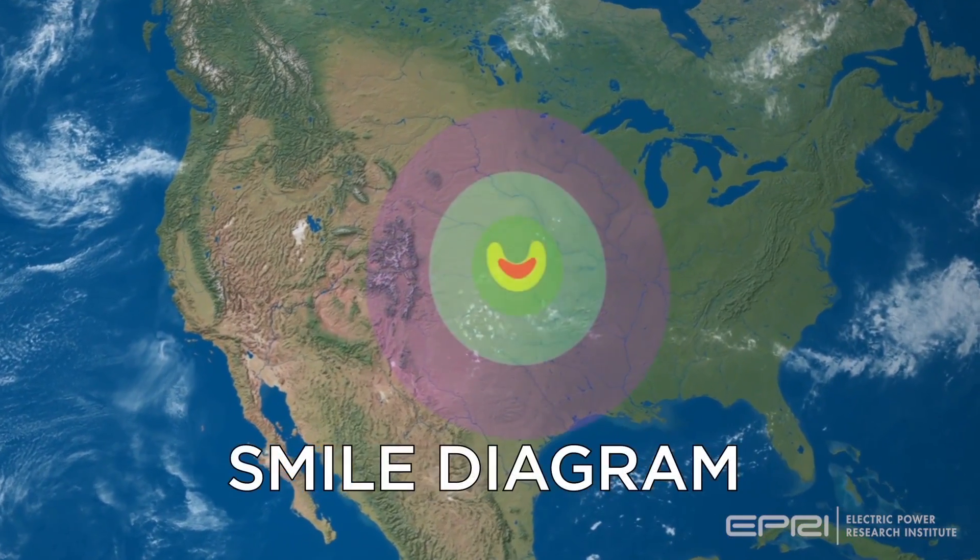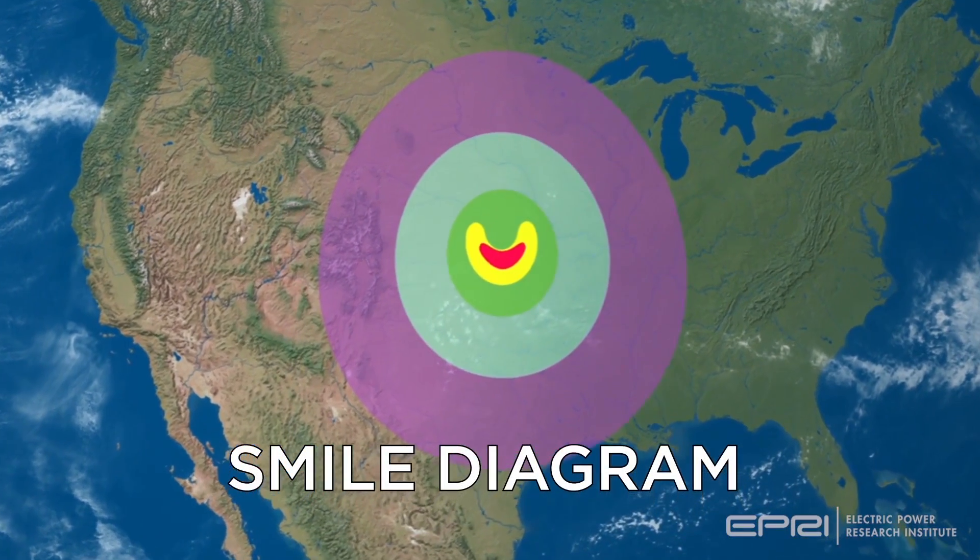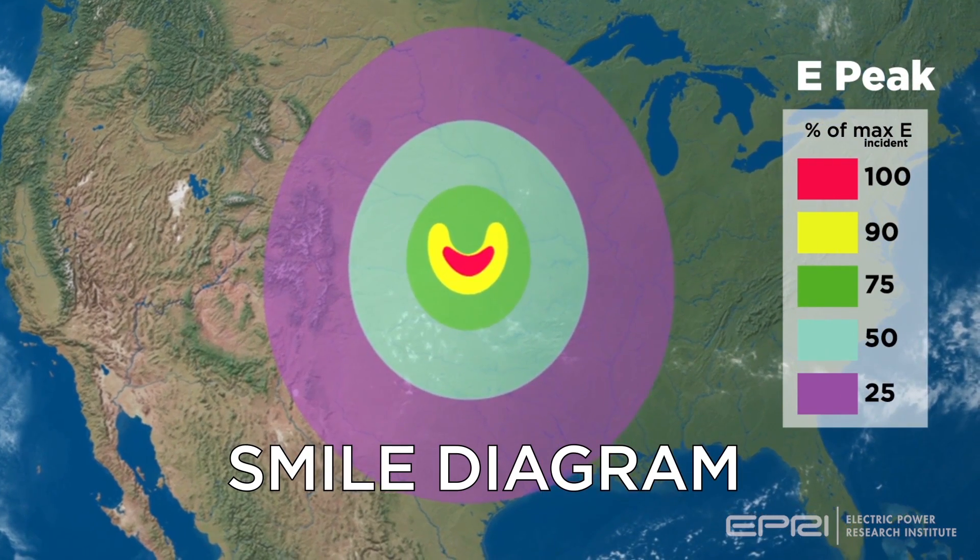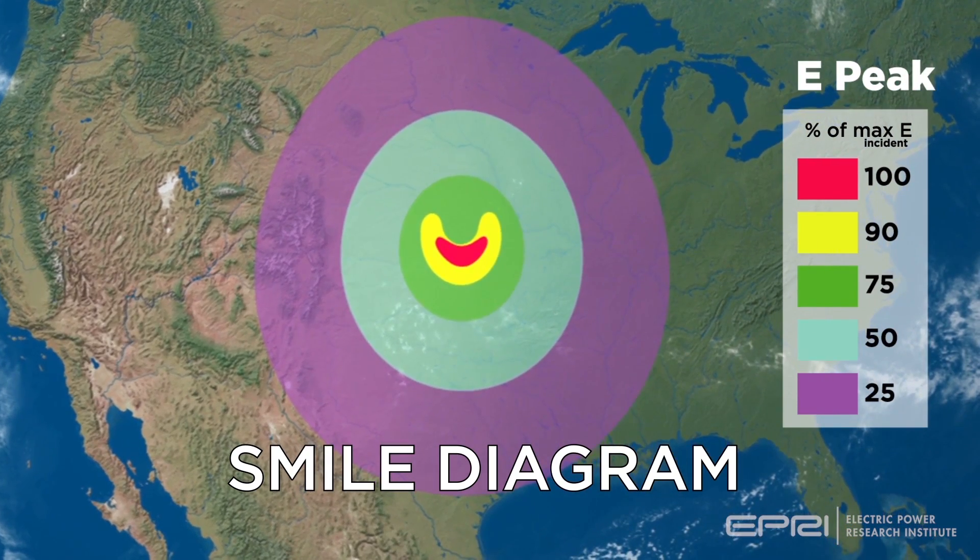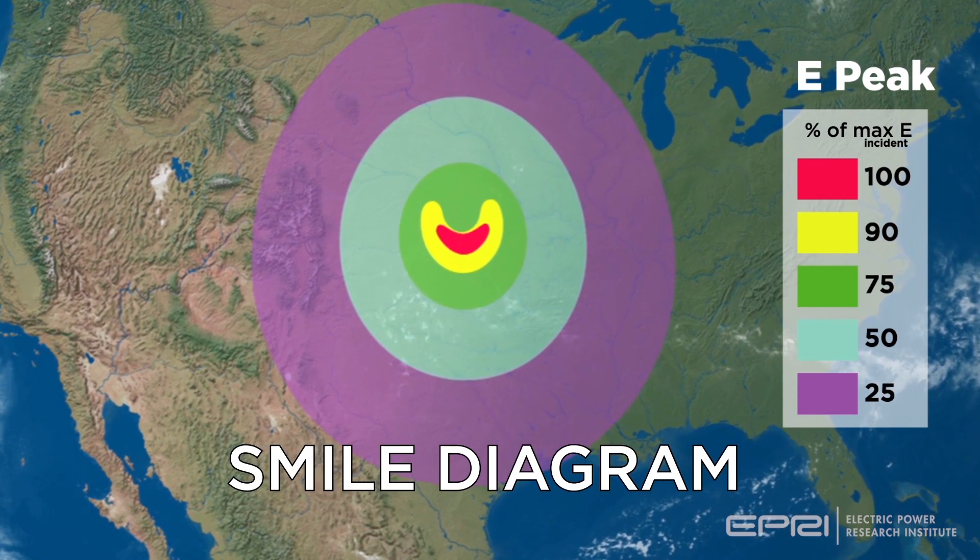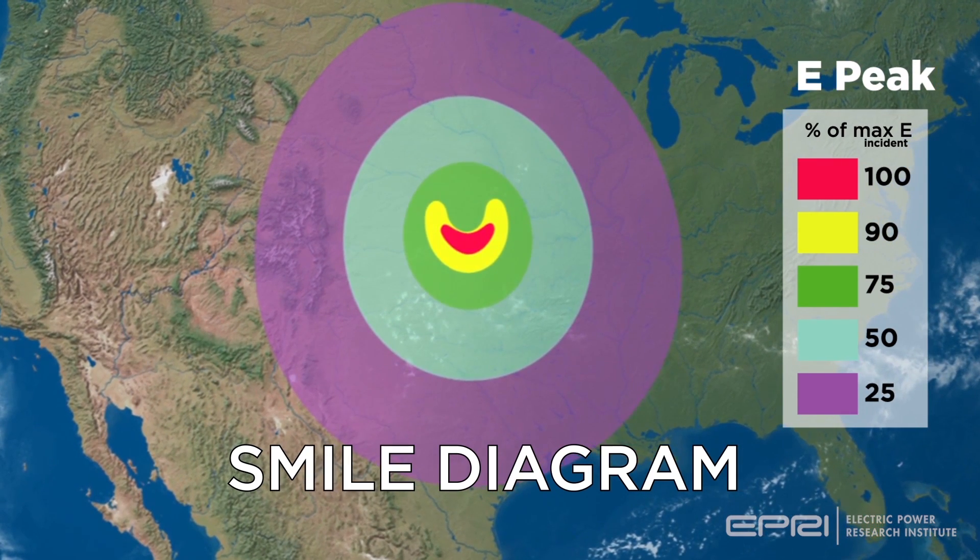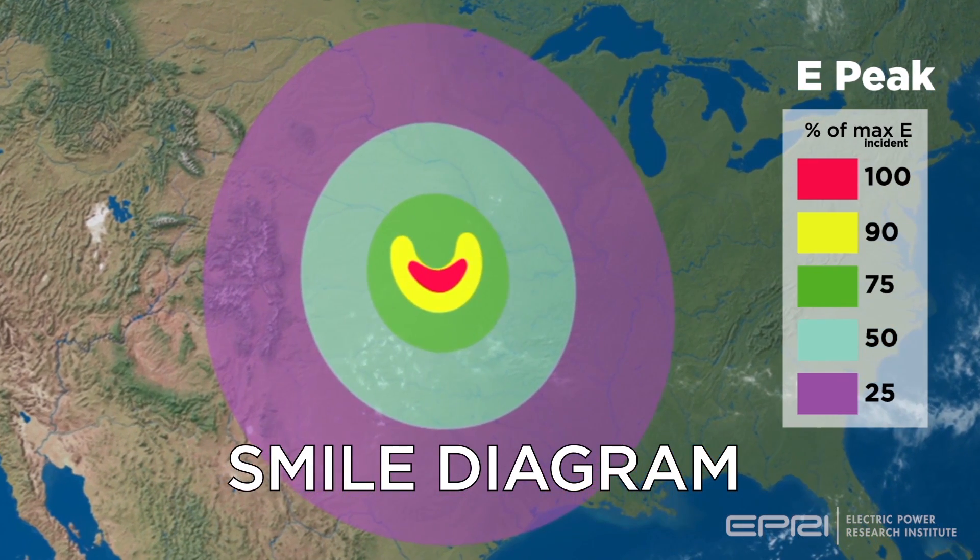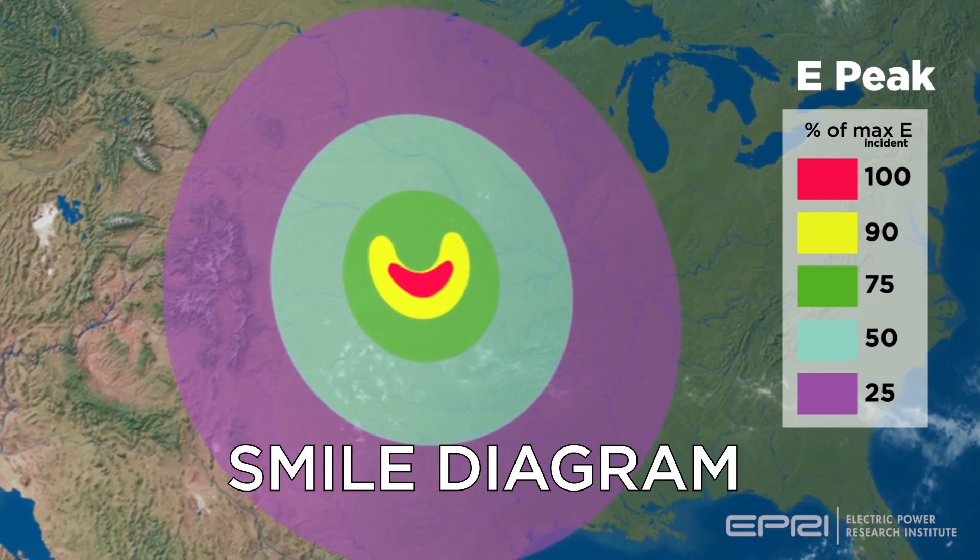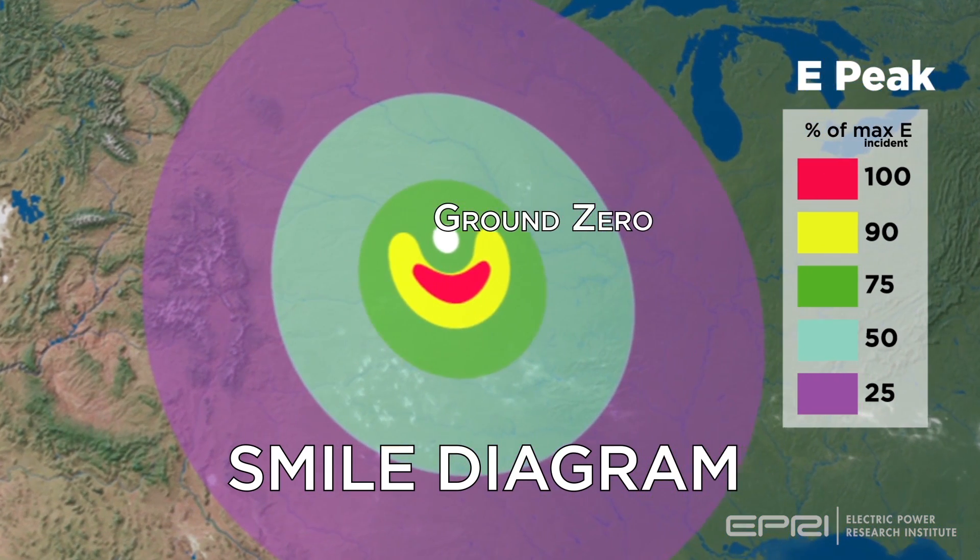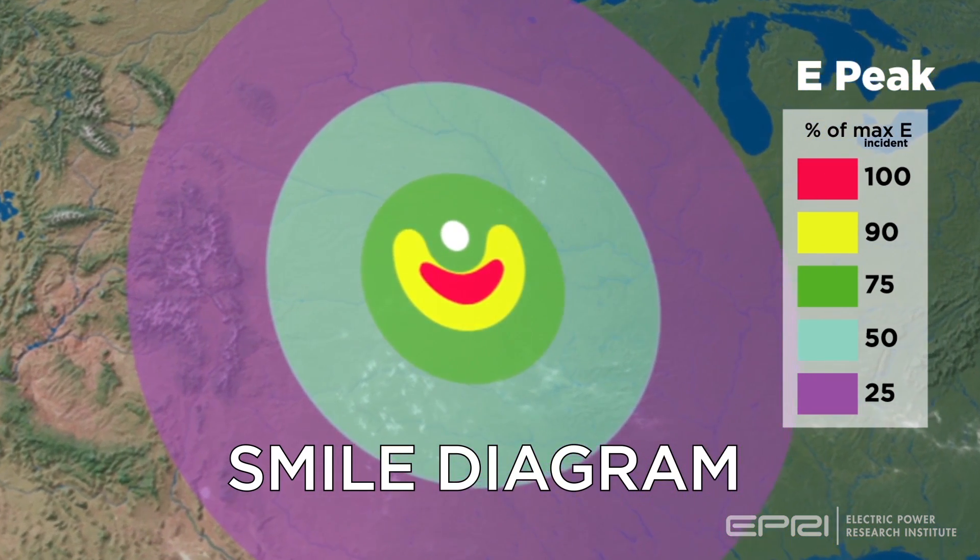For an obvious reason, contour plots of peak E1 HEMP are often called Smile Diagrams. These diagrams illustrate the highly non-uniform nature of the resulting electric field. Here, the maximum electric field shown in red is indicated just slightly south of the ground zero location, which is Omaha.